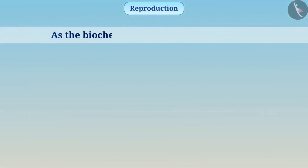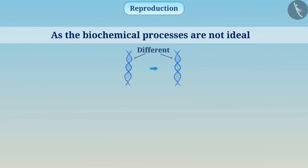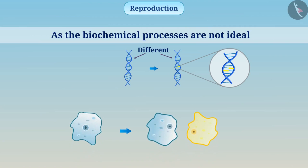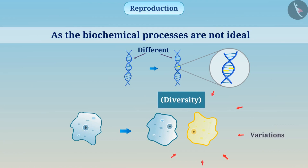As the biochemical processes are not ideal, we can see some differences between the replicated DNA and the parent DNA. Because of these variations, every organism in the population has some unique features which makes it distinct in the population — we call it diversity. Often, some variations are helpful for the protection of the species.